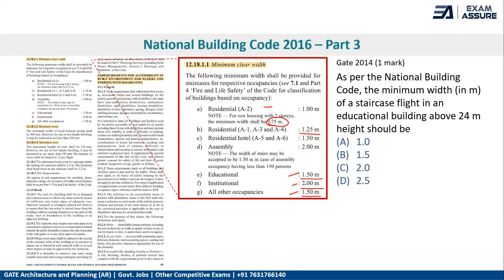Looking at a GATE 2014 question: as per the National Building Code, the minimum width in meters of a staircase flight in an educational building above 24 meters height should be. The height is given to confuse the candidate; what you need to focus on is the minimum width and the type of building — educational. From the table, the answer is B — 1.5 meters.